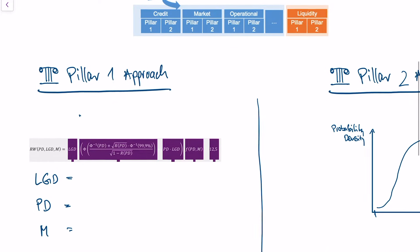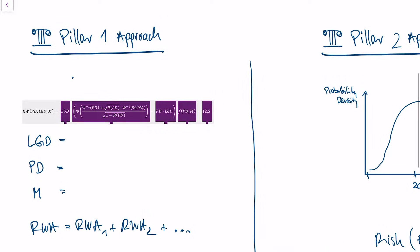The Pillar 1 approach is a very simple approach. It says we need to calculate our risks, and they are called risk-weighted assets. This risk number is simply the exposure — which is just a banking term for the volume of the credit — times a risk weight, Rw.